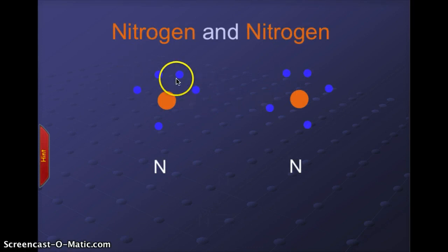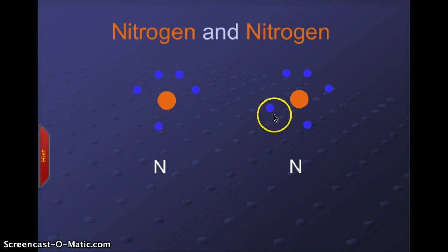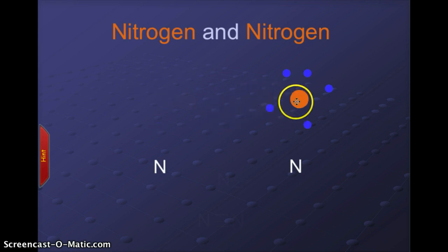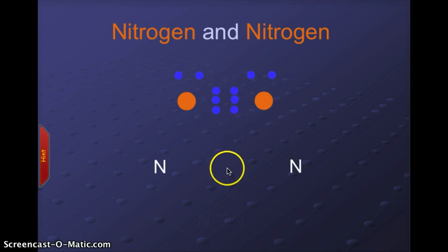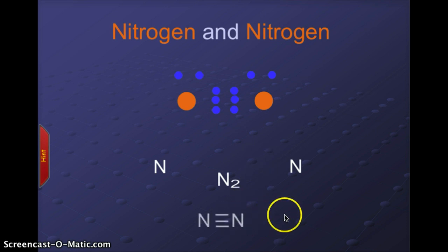Nitrogen has five valence electrons, meaning three empty spaces. The electrons can be rearranged so that we get three pairs of electrons being shared in the middle. In sharing those three pairs, each nitrogen atom has the sensation of eight electrons filling its outer orbit, giving us an N₂ molecule. The two nitrogen atoms are held together by a triple bond, sharing three pairs of electrons.